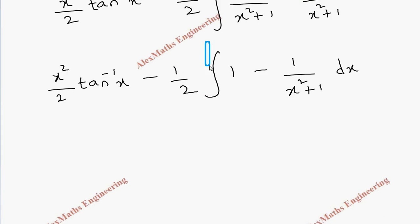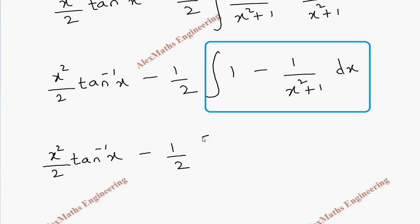So we have to write the other terms as it is. x square by 2 tan inverse x minus 1 by 2, make it open. Integration of 1 is x and integration of 1 by x square plus 1 is tan inverse x plus c.